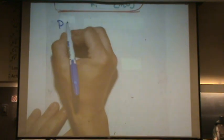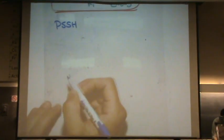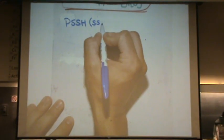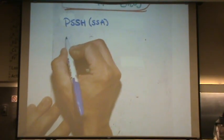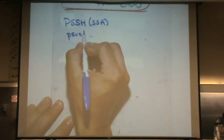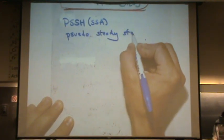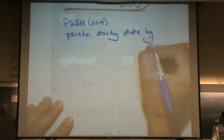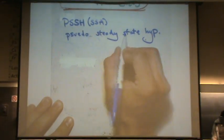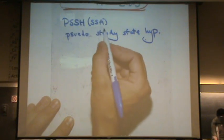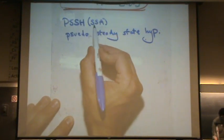PSSH for reaction mechanisms is a method, an assumption that allows us to solve—some people say SSA. PSSH: pseudo steady state hypothesis. Pseudo steady state hypothesis, or SSA, you'll see in some text, steady state assumption.